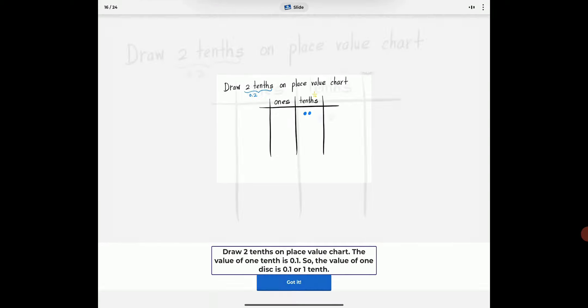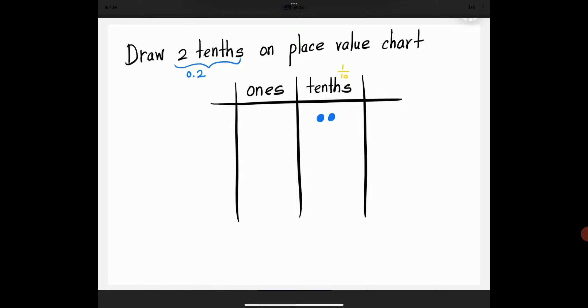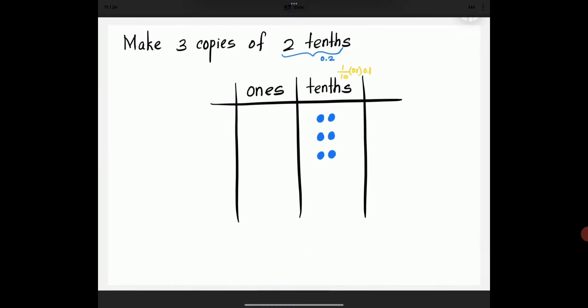Draw 2 tenths on a place value chart. The value of 1 tenth is 0.1. So, the value of 1 disk is 0.1 or 1 tenth. Draw 3 copies of 2 tenths in a place value chart.